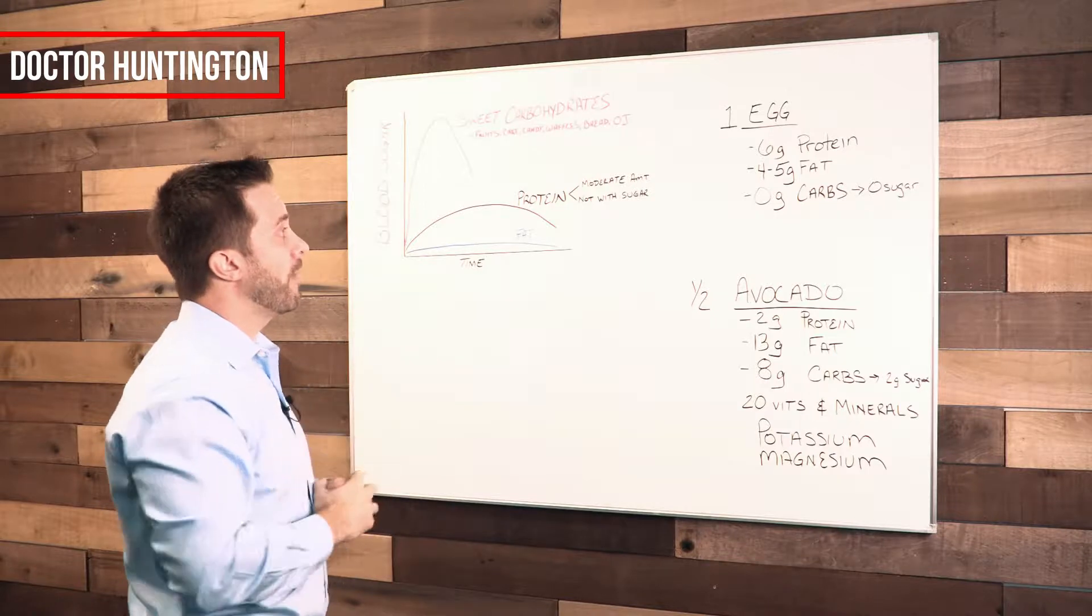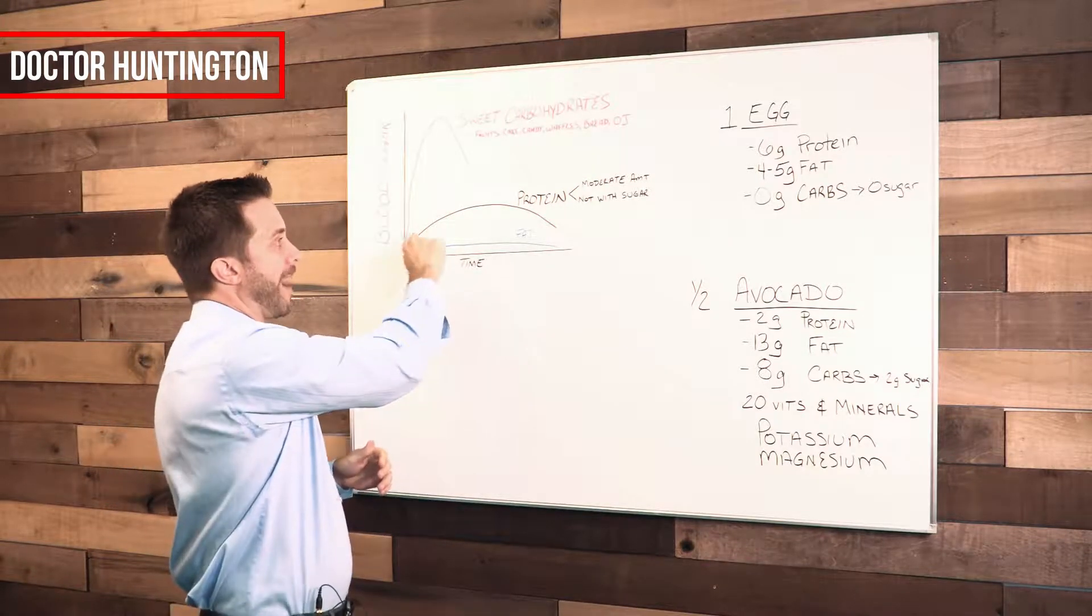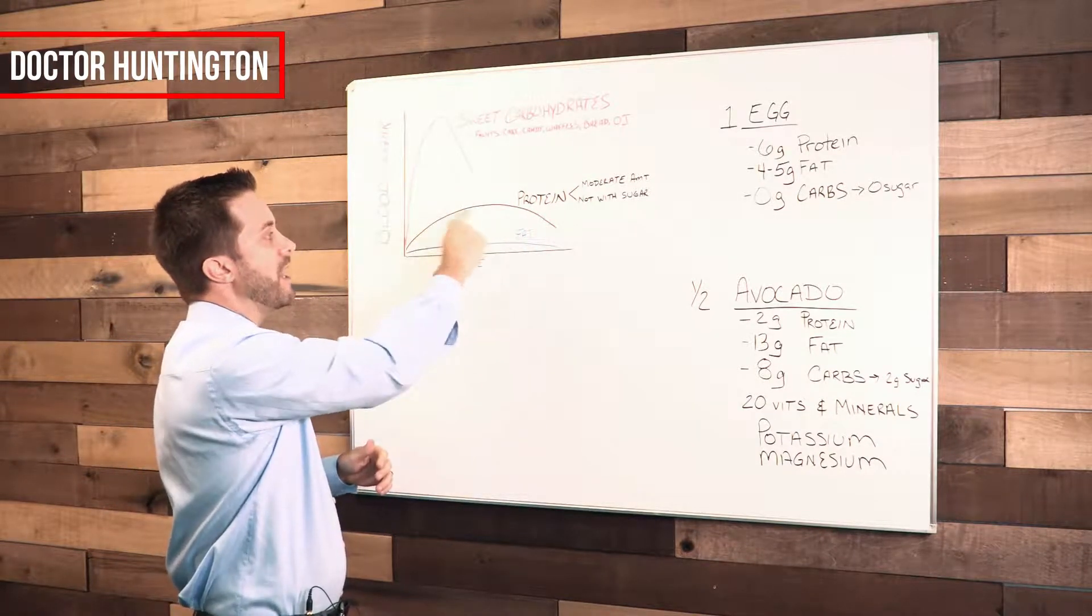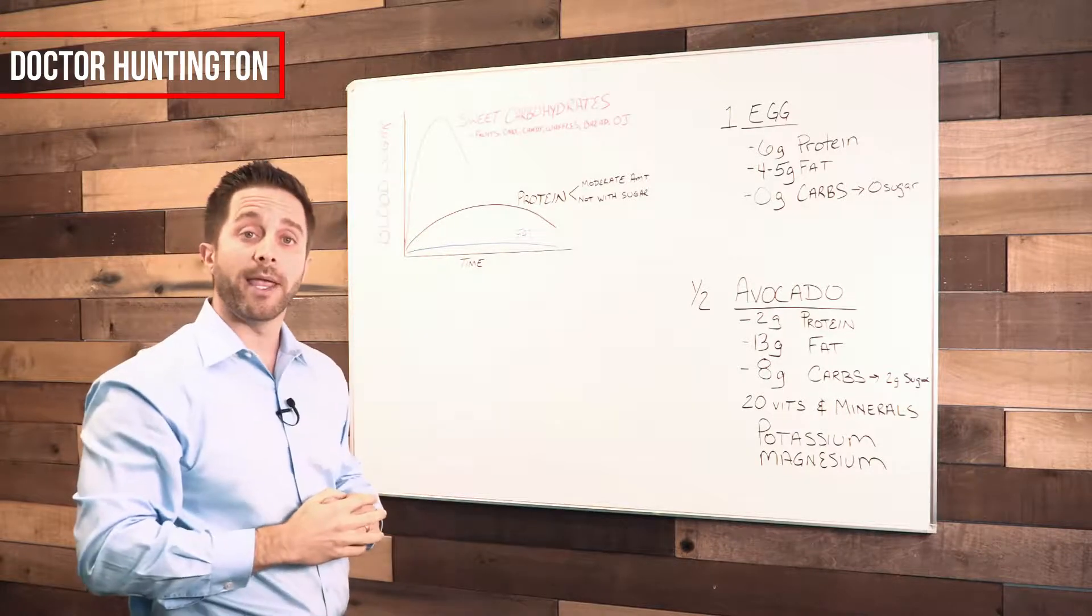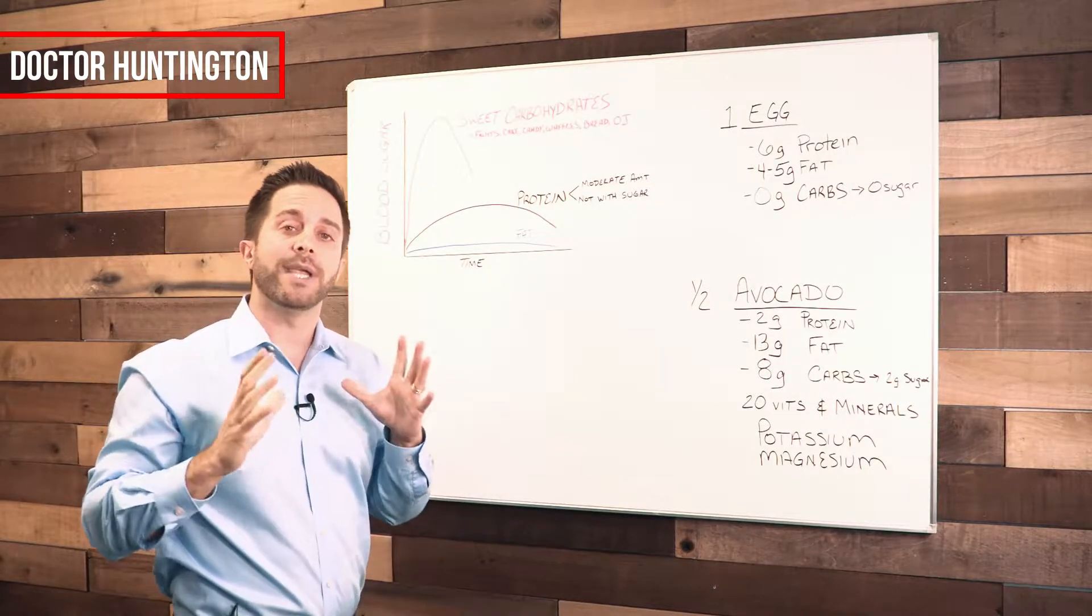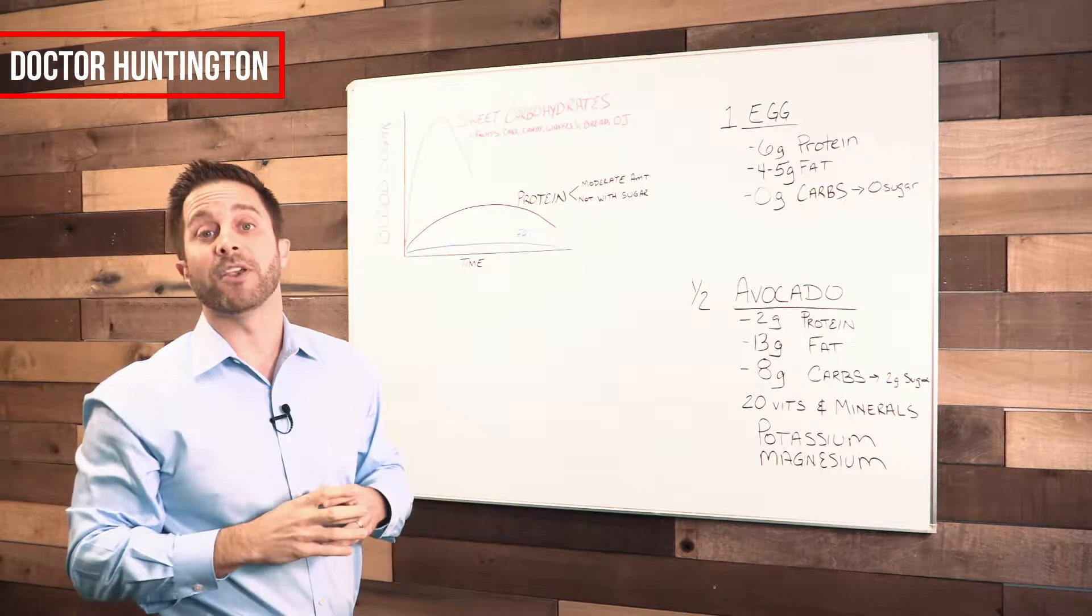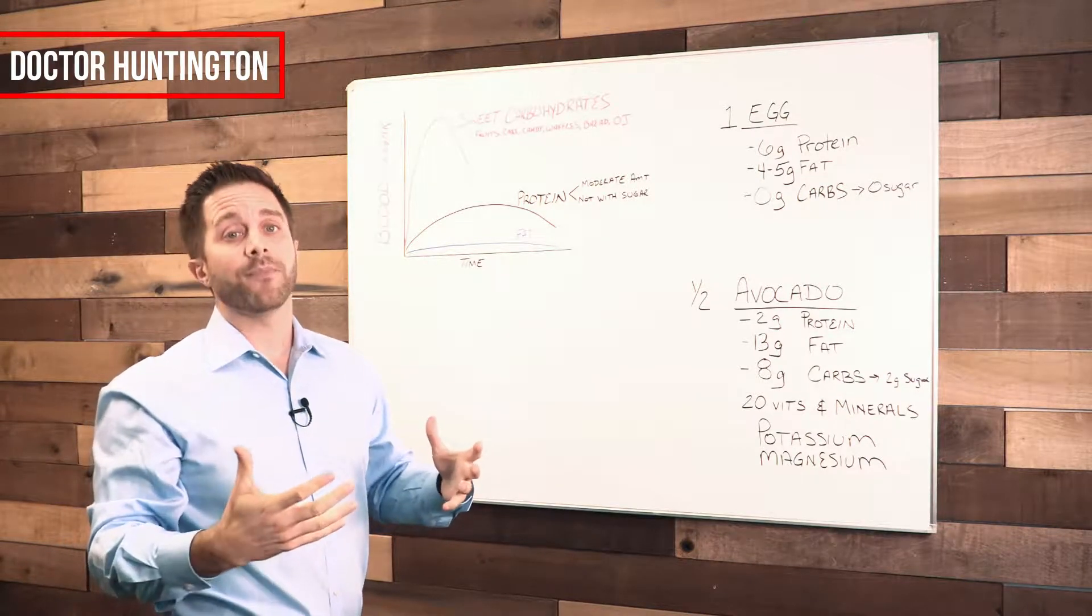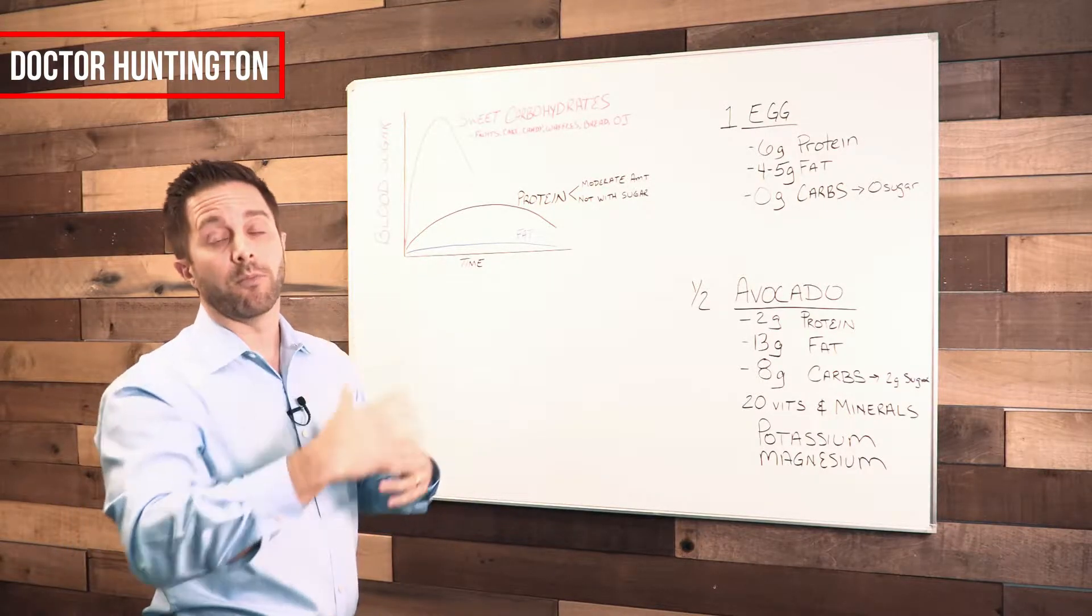There's two things you've got to remember about protein. In order to not get a large blood sugar spike when you eat protein, you got to make sure that you eat a moderate amount of protein, because if you eat a lot of protein, then it'll spike your blood sugar.